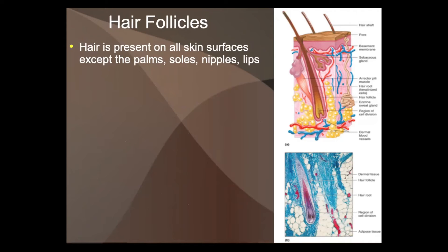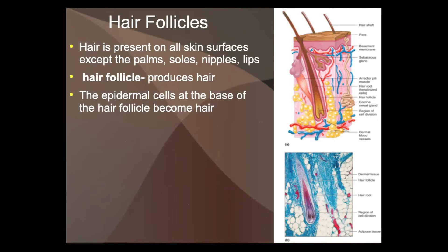Hair is present on most skin surfaces except for a few exceptions. Lots of times you have hair you just can't see very well because it's so small or transparent. Hair follicles produce hair — they're the skin layer that makes the hair that goes around it. Skin cells become hair: they die, they keratinize, they become full of protein, and that creates the hair.